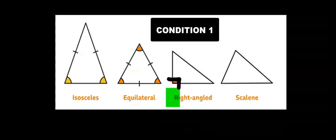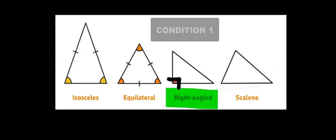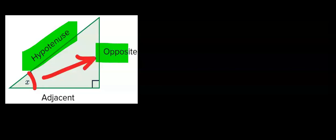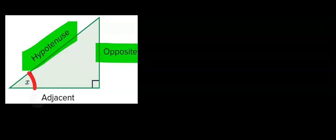The triangle under consideration must be right-angled. An angle must be involved. Since a right-angled triangle has only three sides, the side facing the right angle is always known as the hypotenuse, and this is the longest side. The side facing the angle is always known as the opposite, and the remaining side is always known as the adjacent. Always look out for the opposite and hypotenuse first; any remaining side is the adjacent.